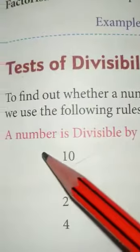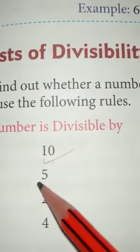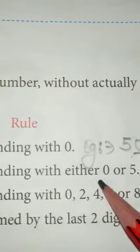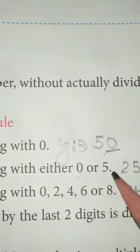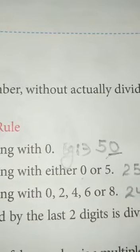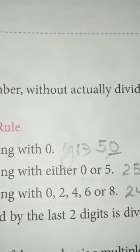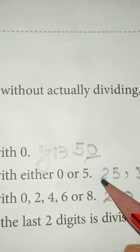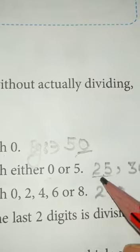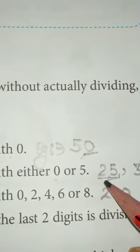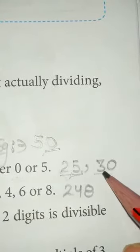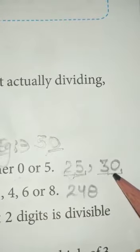Next, how to check whether a number is divisible by 5. The rule is: if the number is ending with either 0 or 5, it means it is divisible by 5. Like 25 — it is ending at 5, so it is divisible by 5. And 30 — it is ending at 0, so it is also divisible by 5.